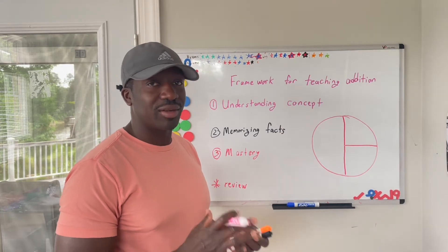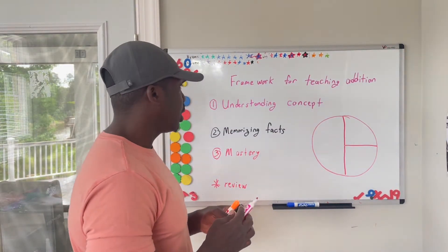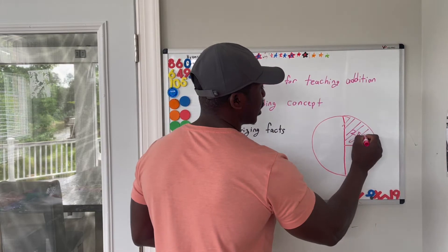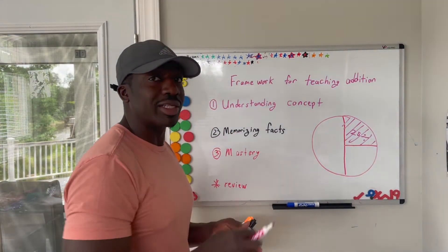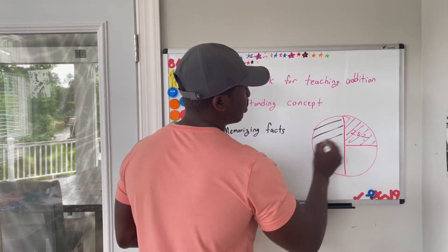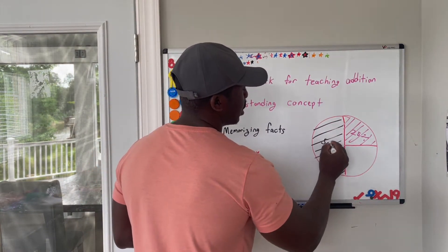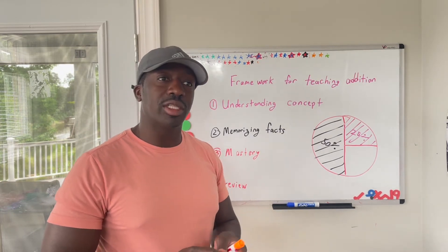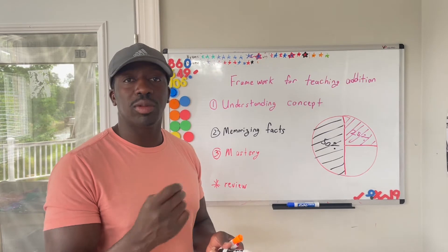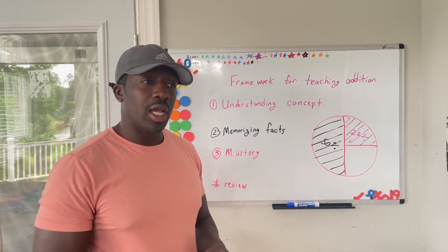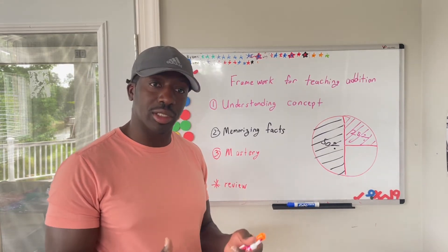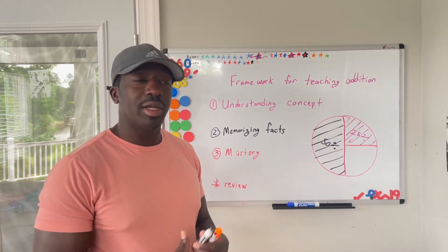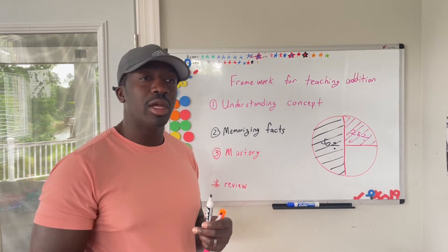Once they actually understand that, the next step is memorizing the math facts. This is actually the challenging part of this whole process. The understanding of the concept portion is probably about 25% of learning the whole process. Understanding and memorizing the facts is probably about 50%. It's great if a child knows and can do addition with manipulatives, but at some point, in order for that child to advance, they need to be able to recall all of their math facts. They need to know that four plus five equals nine, two plus two is four. This whole part is the part that takes the longest amount of time, which is why I'm such a proponent of early access and early education because it allows you to spread this whole portion over a long period of time and really build on it.